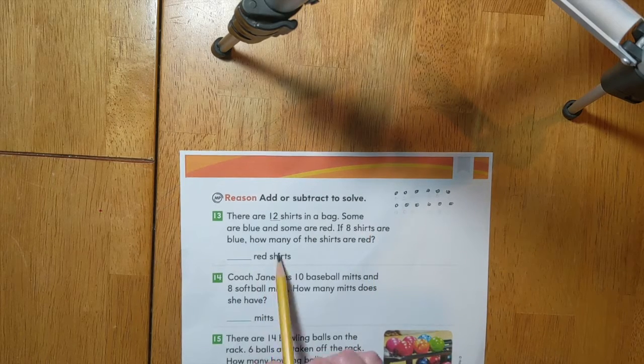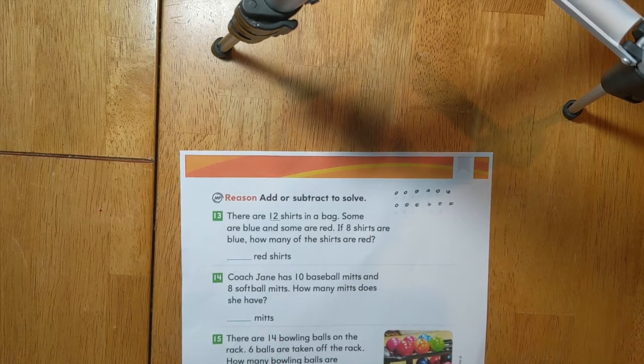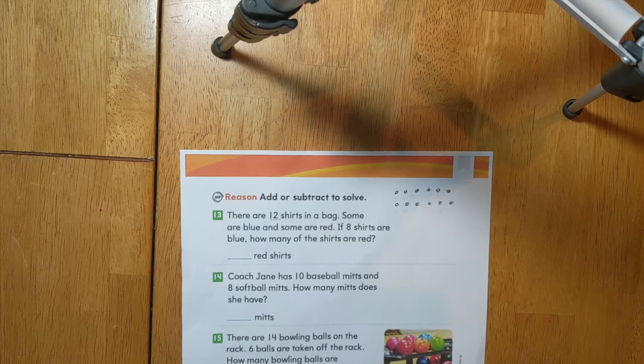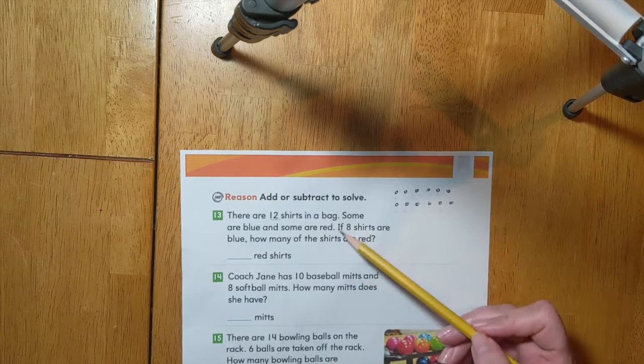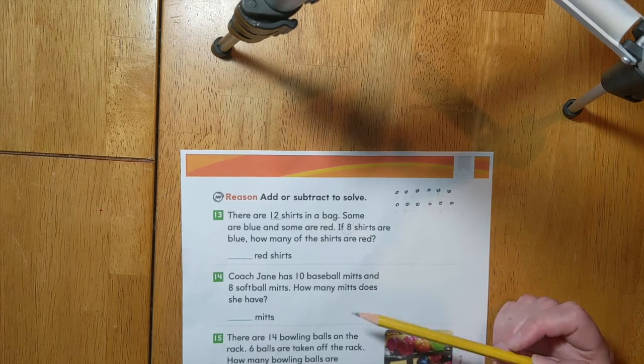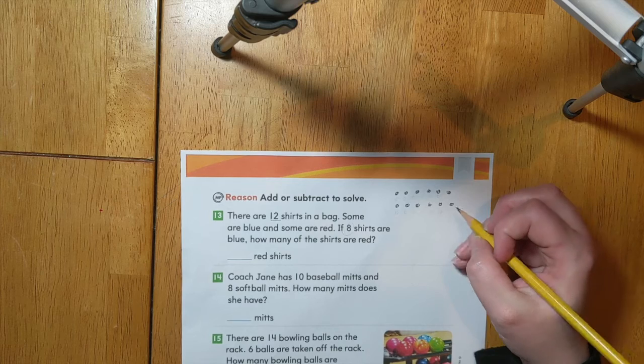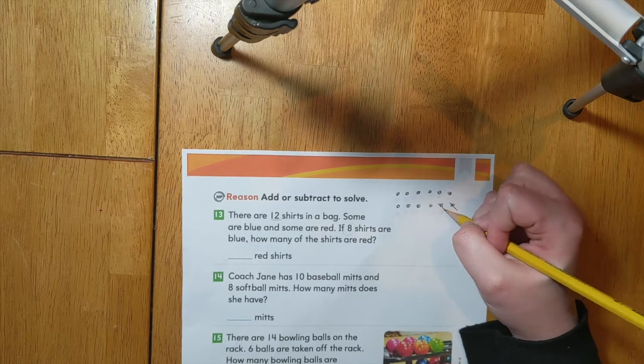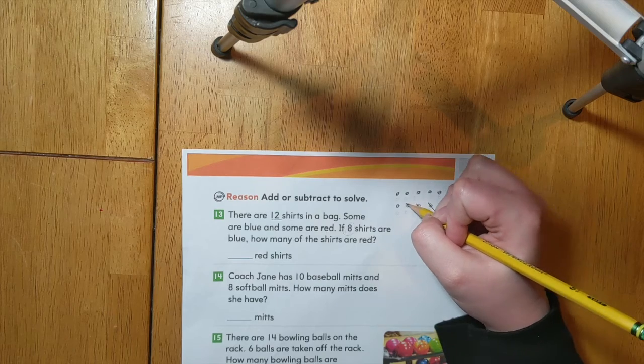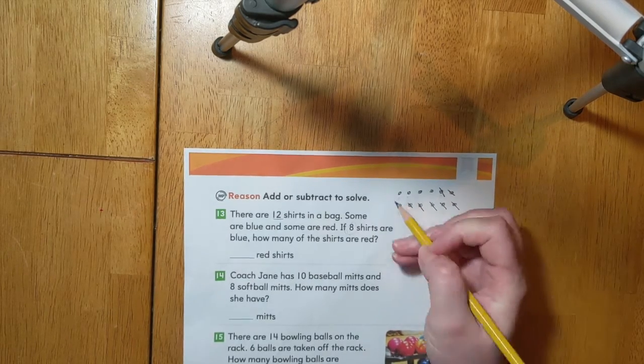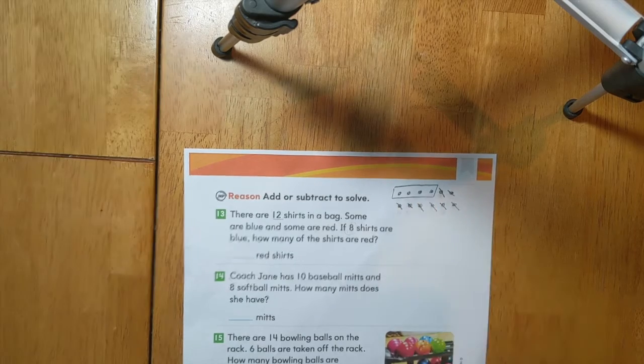We know that some are blue and some are red. Then they tell us that 8 shirts are blue. So we can subtract 8 from 12 to find how many red shirts there are. Let's go ahead and cross off 8 ones. 1, 2, 3, 4, 5, 6, 7, 8. That leaves us with 4 ones.